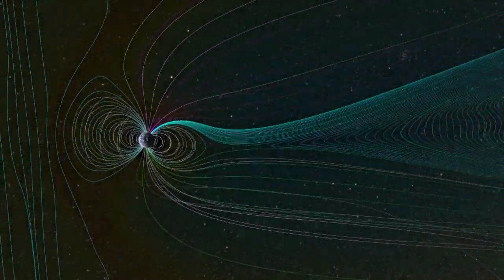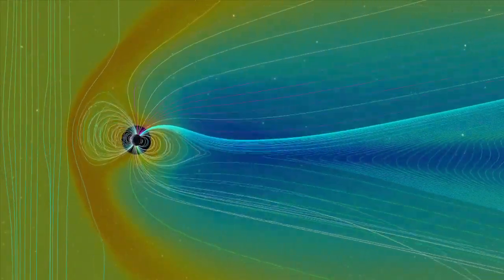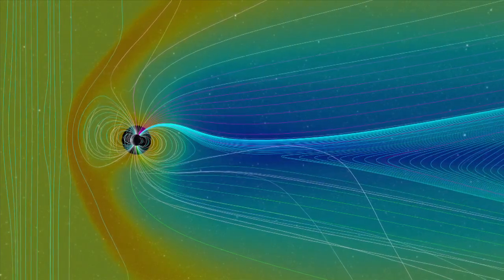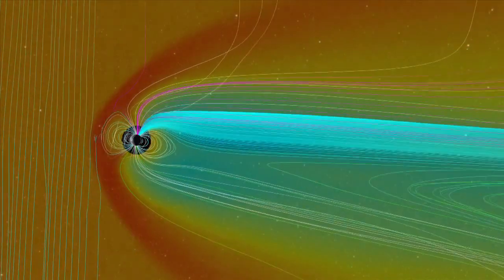In this visualization, Earth's magnetic field structure is represented by lines that correspond to the paths charged particles would travel close to the Earth.